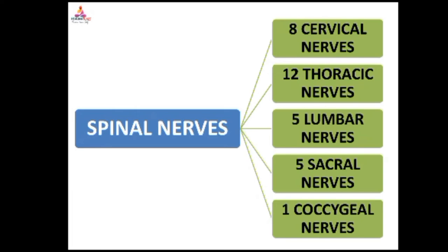Spinal nerves arise from the spinal cord by two roots: the anterior root and the posterior root. There are 31 pairs of spinal nerves: eight cervical nerves, twelve thoracic nerves, five lumbar nerves, five sacral nerves, and one coccygeal nerve.